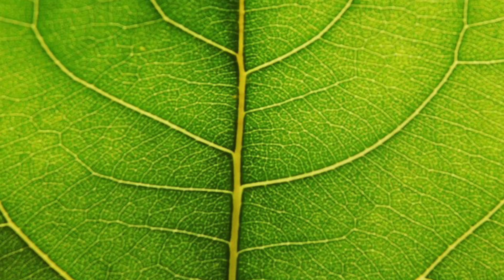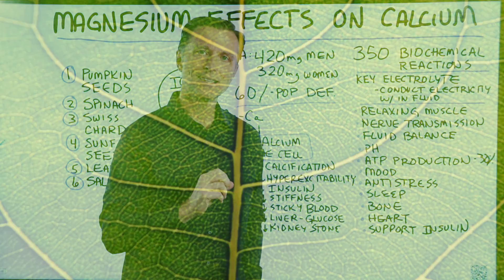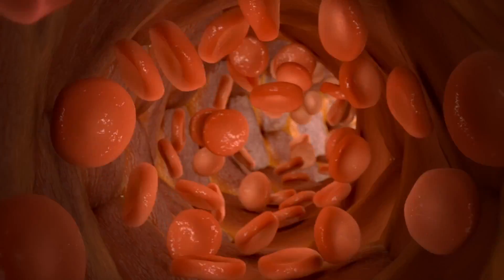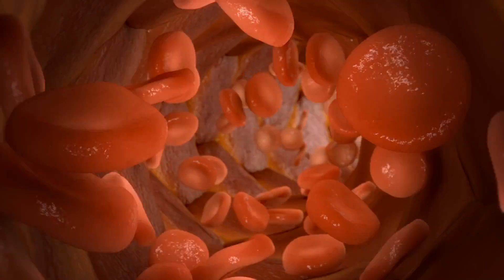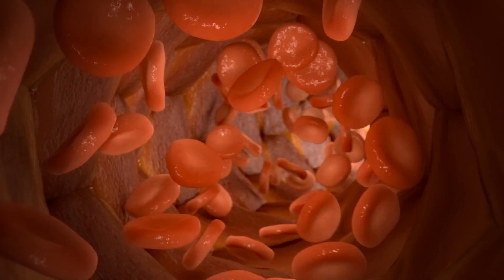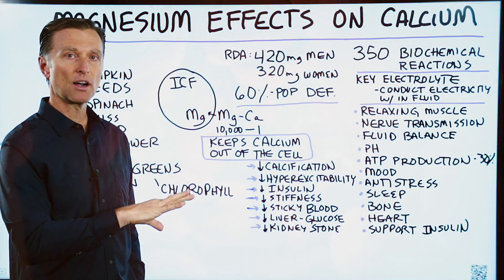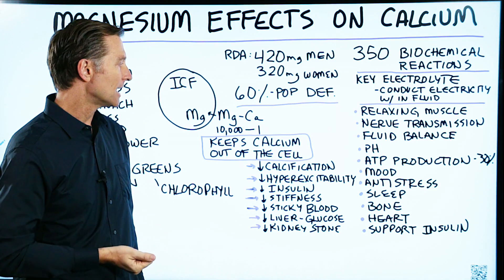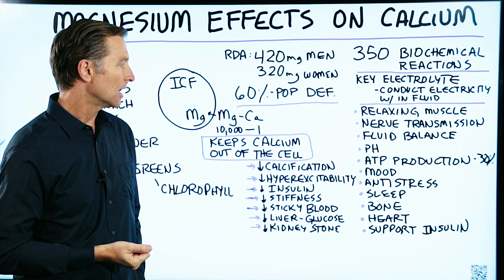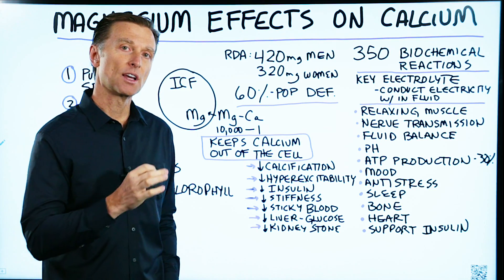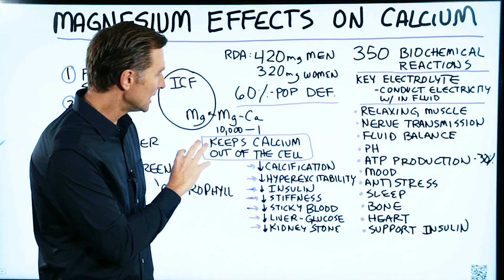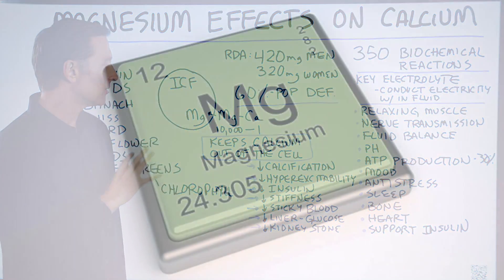Chlorophyll, which is the blood of the plant, has a very similar chemistry to our own blood. The difference is that we have iron, which is red, in the center of our blood molecule, and the plant has magnesium, which gives a slight green color to its chlorophyll.